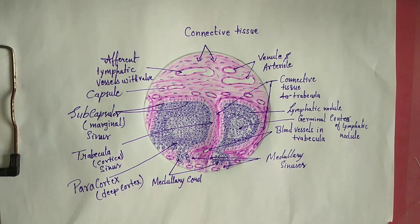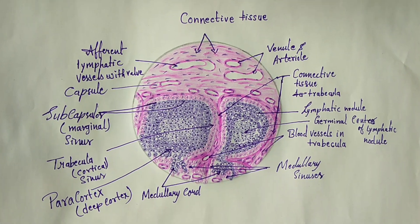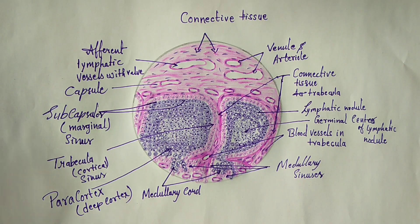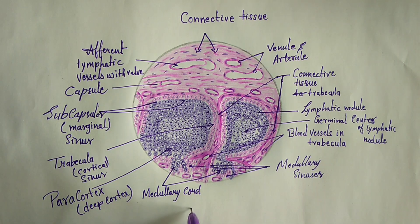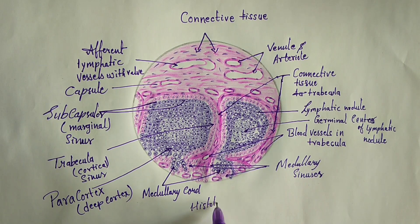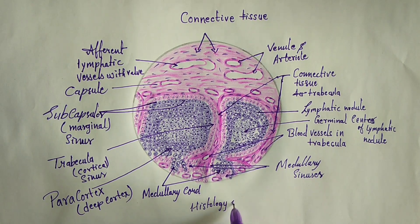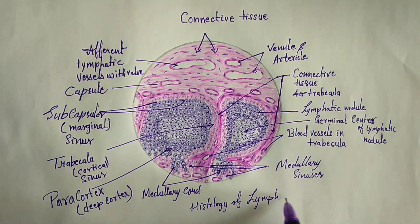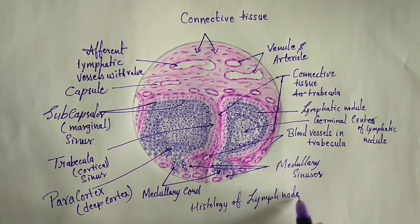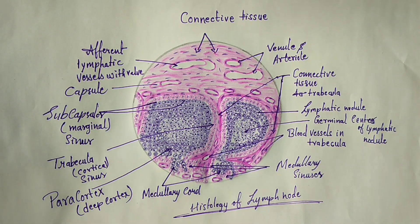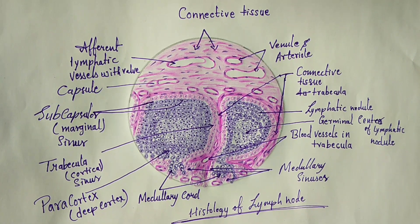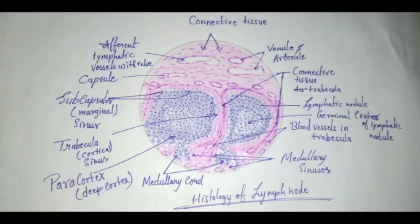This completes the histology of lymph node. The identification points are: germinal center of lymphatic nodules, medullary sinuses, medullary cord, trabecular sinuses, paracortex, afferent lymphatic vessels, and lymphatic nodules. These are the identification points for the histology of lymph node. Thank you very much — please like and subscribe to our channel.